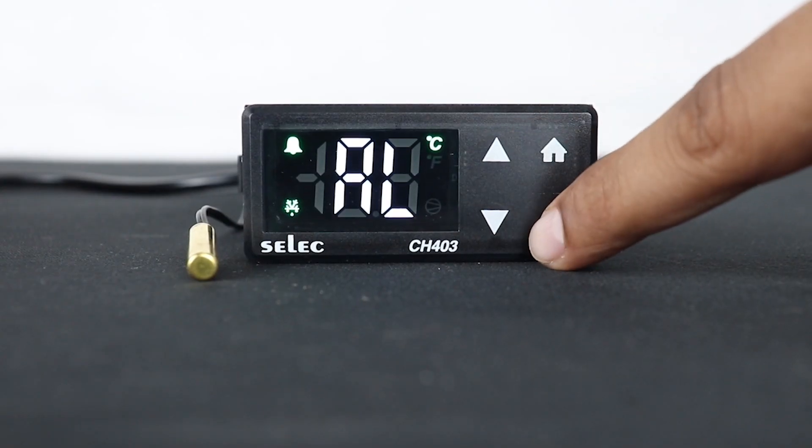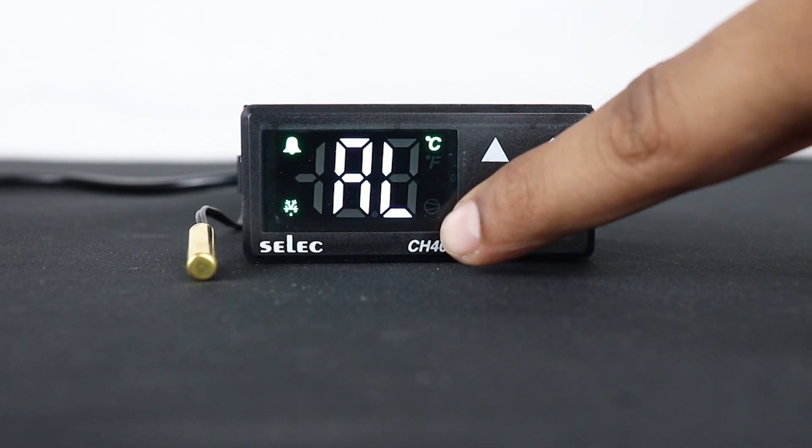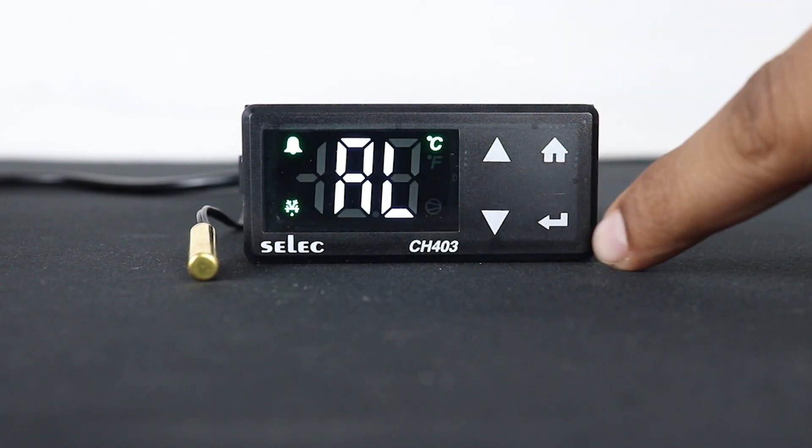Next parameter is Fn, it is for alarm indicator. By using this parameter, user can enable or disable the alarm indication from the display.